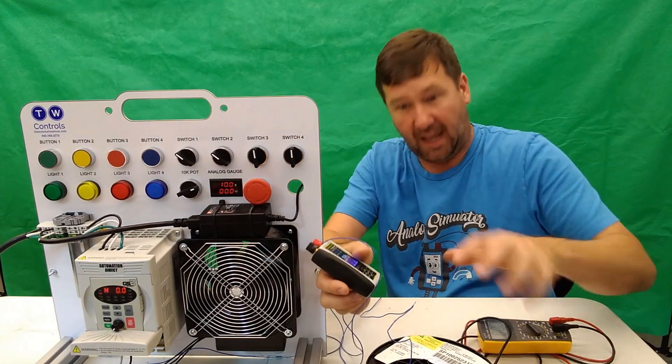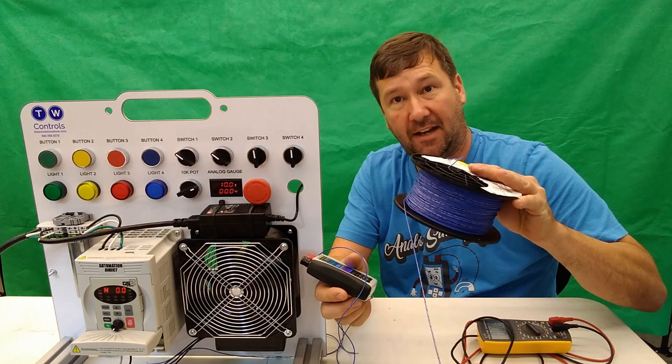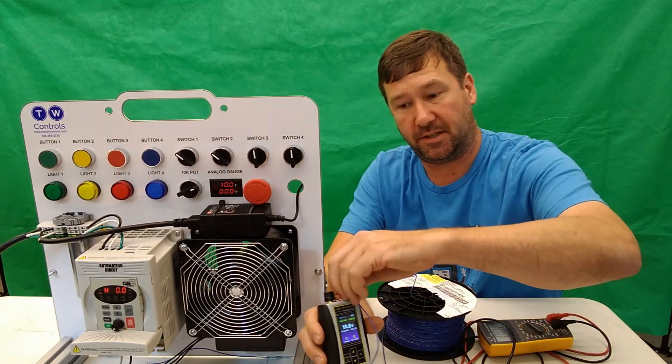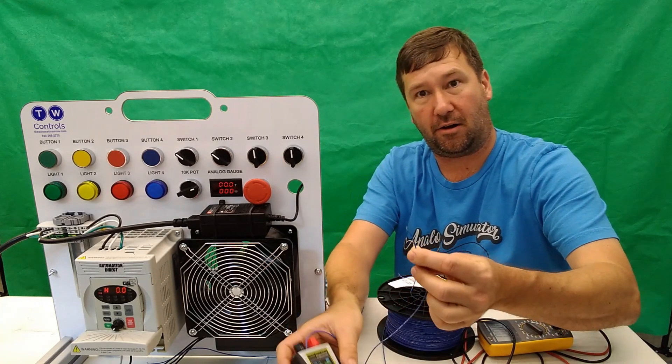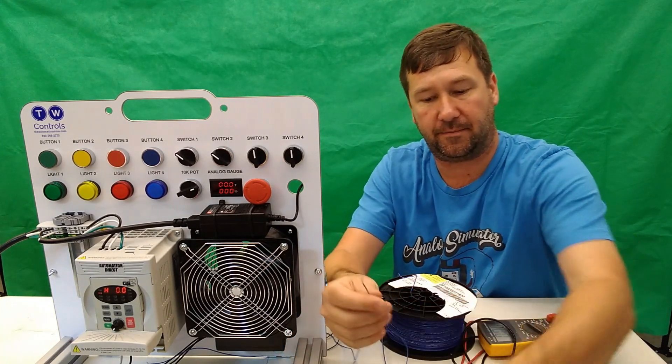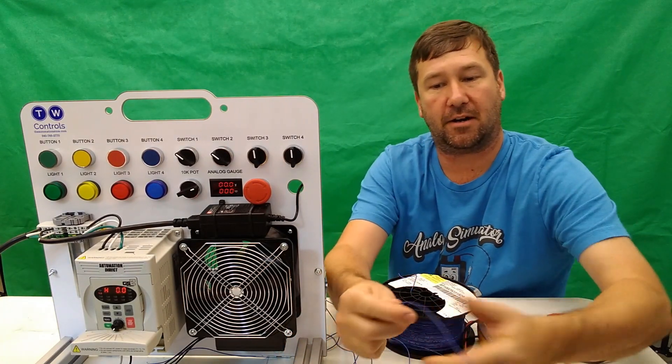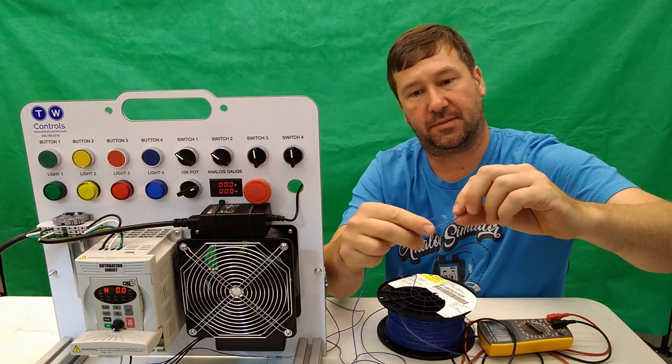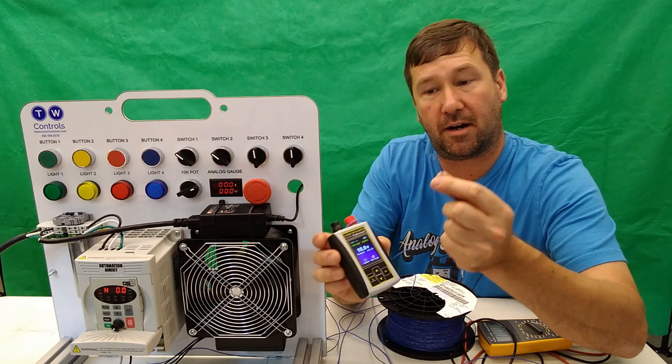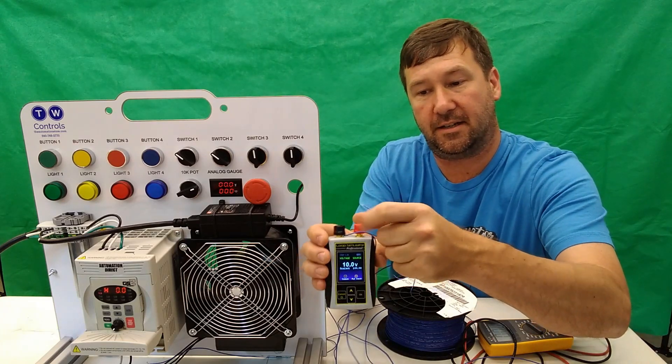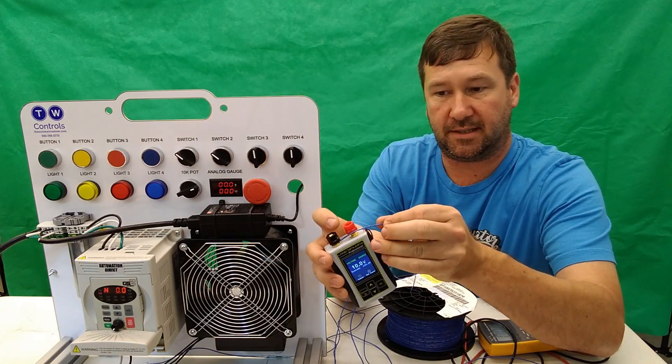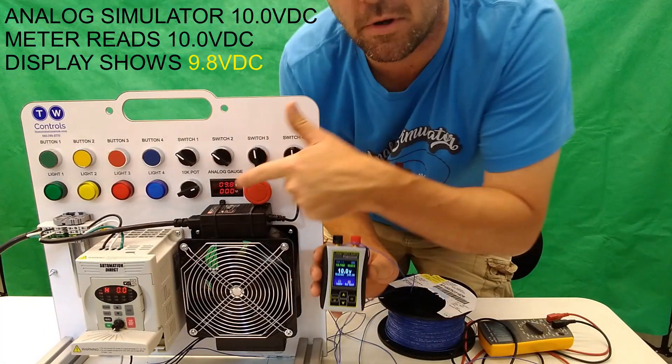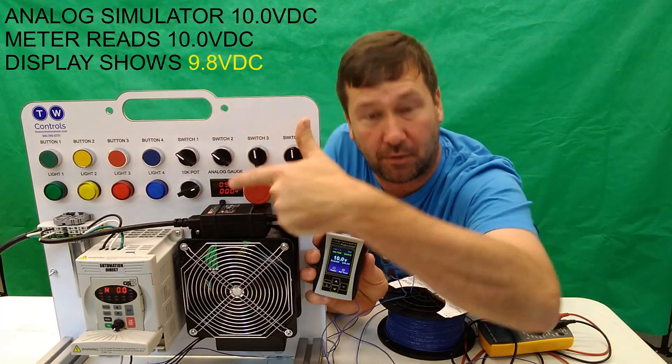Now what I'm going to do is I'm going to add this thousand foot worth of wire into the circuit. So I'm going to take the positive terminal off of our analog simulator. I have this wire here connected to the spool of wire, and then this wire here is the other end of it. So I'm going to slide it into our post. You see it says 10 volt here, but we're only showing 9.8 volt over here.